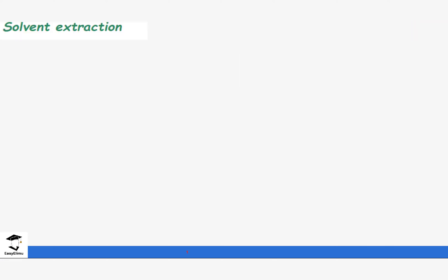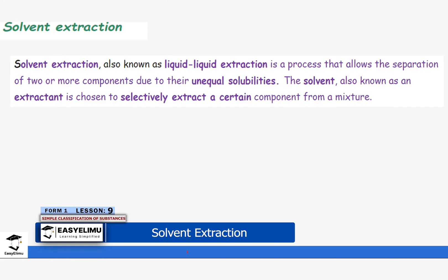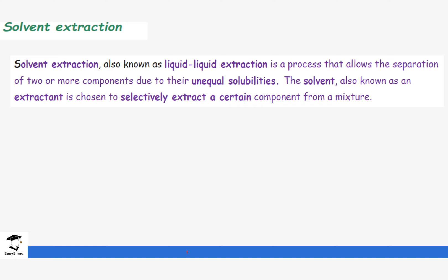Solvent extraction is a liquid-liquid extraction process that allows the separation of two or more components with unequal solubilities. In this case we are going to be separating oil from nuts using a solvent. The oil mixes with the solvent to form a liquid-liquid mixture, and we then need to get rid of the solvent. The solvent is also known as the extractant solvent because it helps us extract a specific component from the mixture.